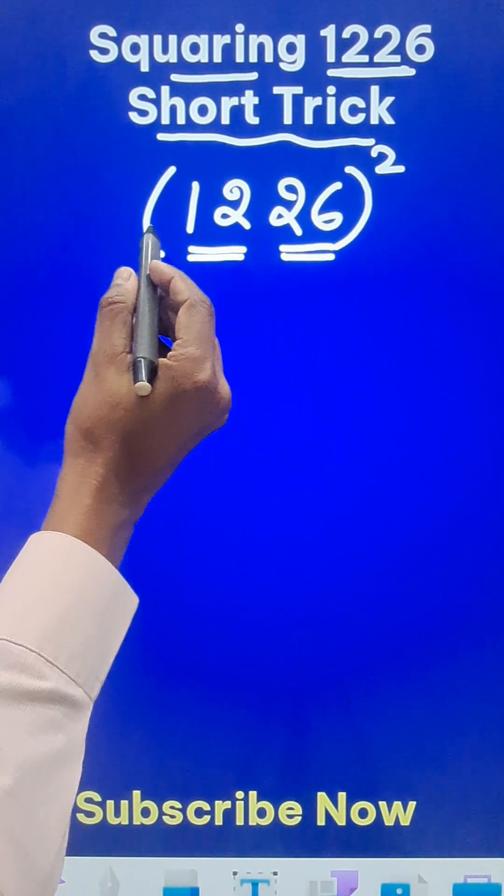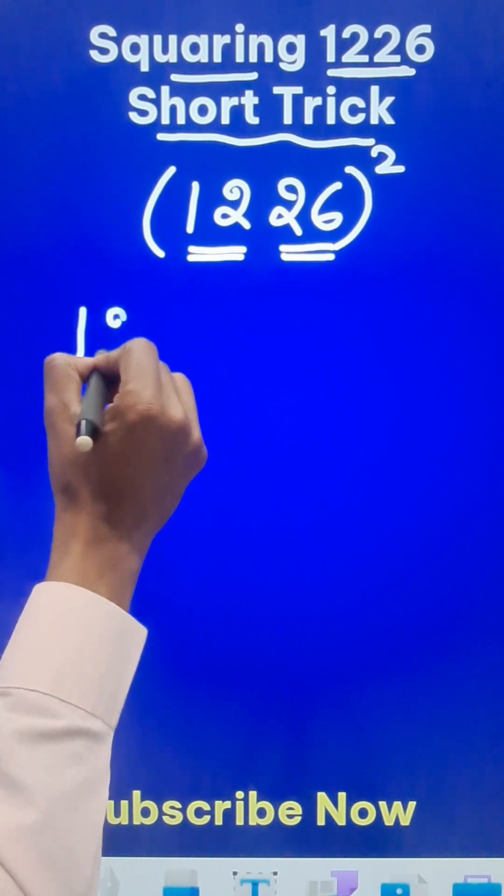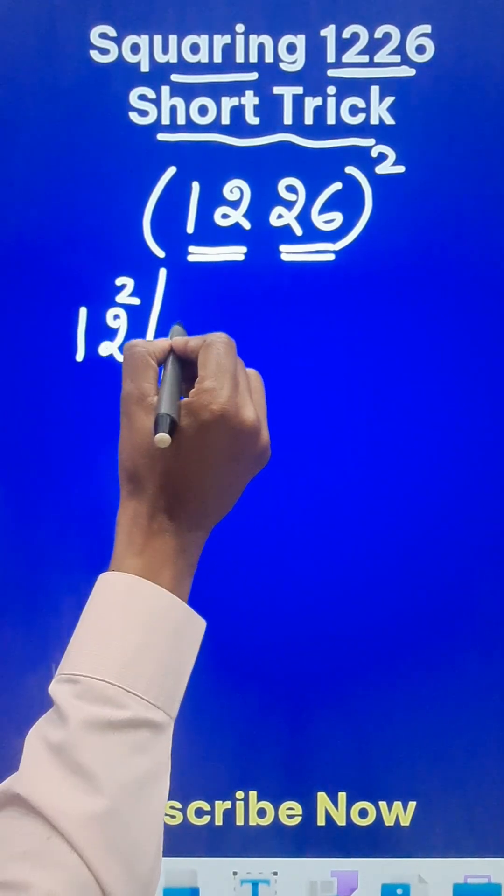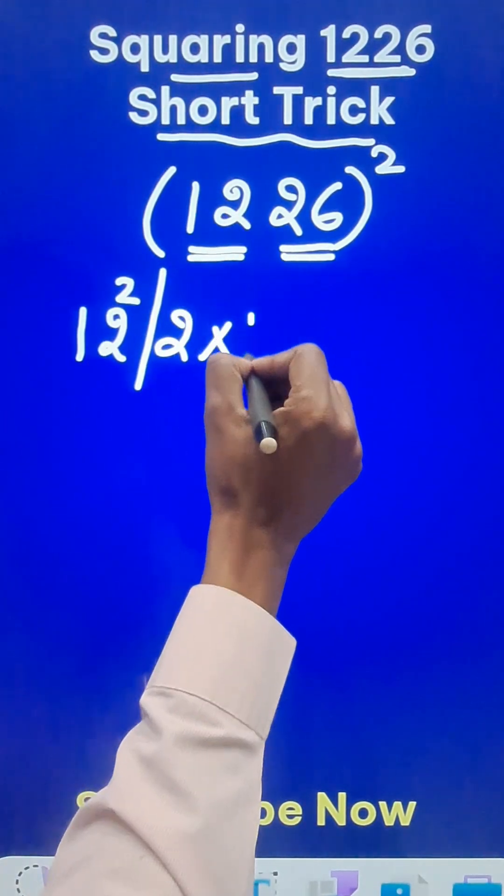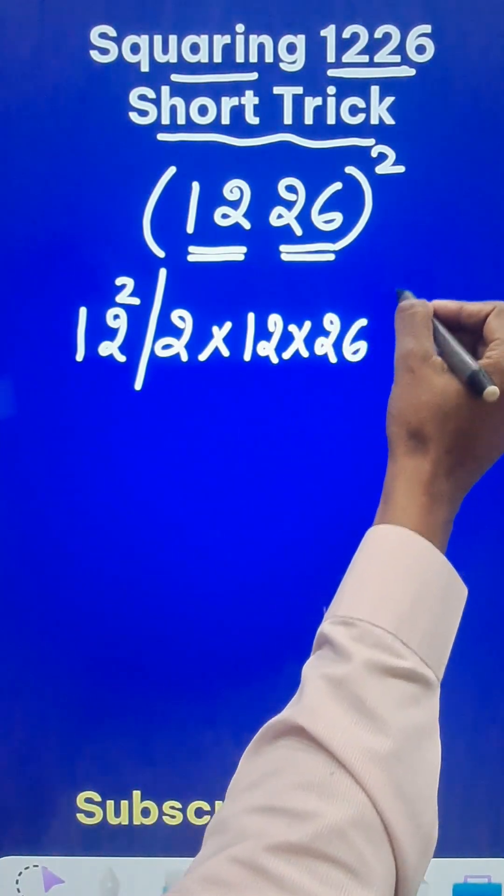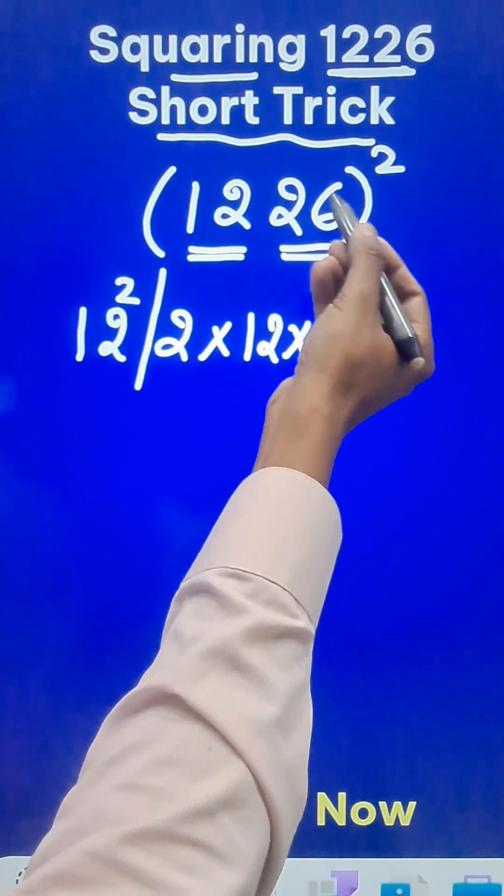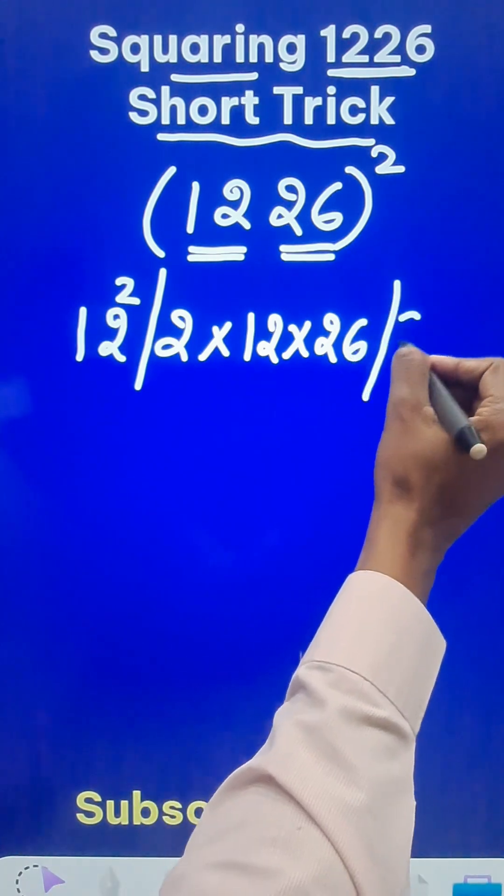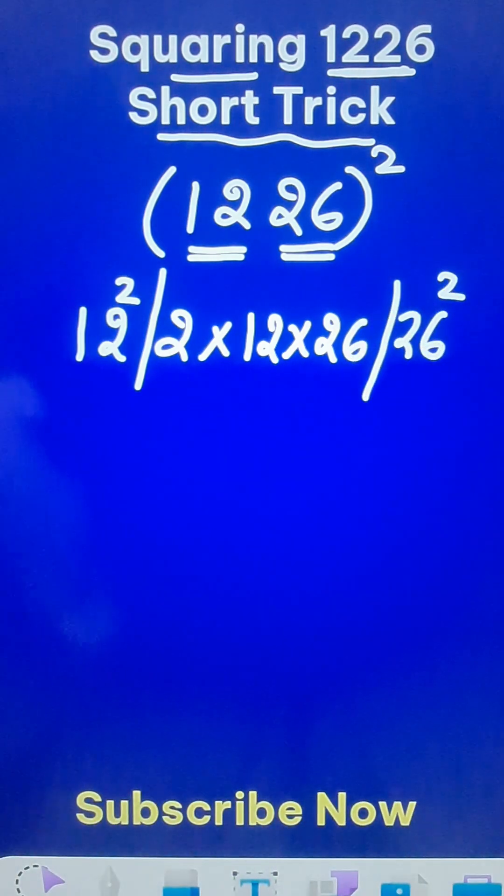First of all, I need to write the square of 12, followed by two times the product of 12 and 26, and finally I need the third number which is the square of the second part, that is 26 square. Now these are the three numbers which I need to find.